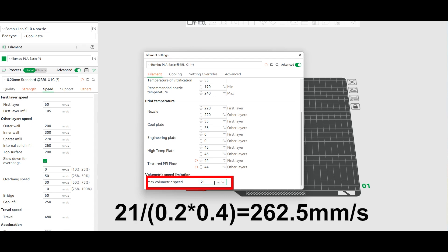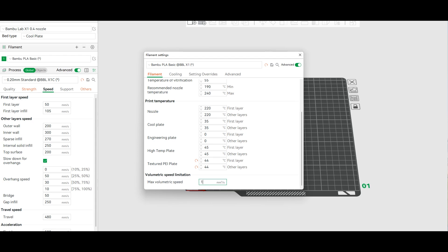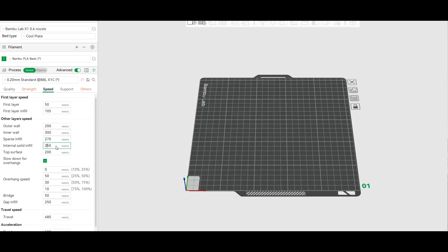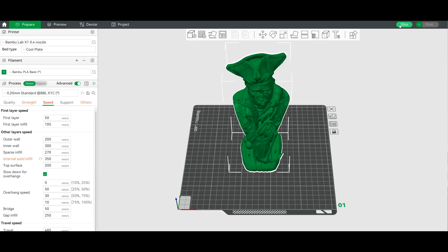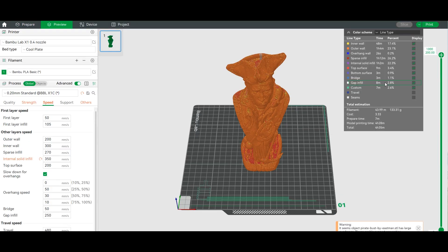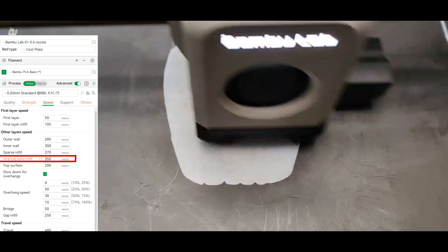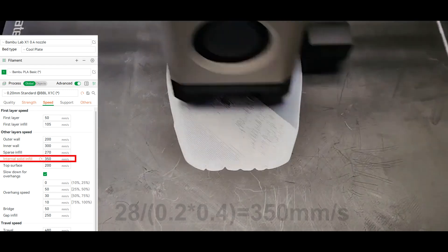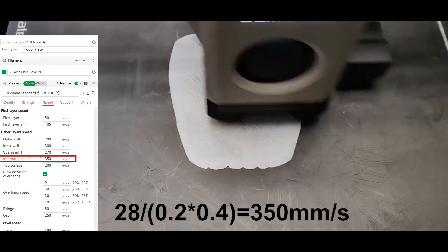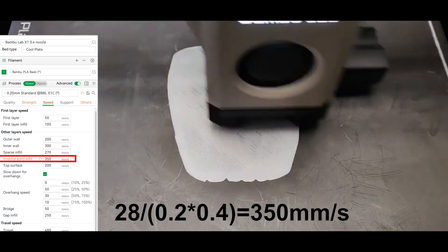At this flow and layer height of 0.2 millimeters, line width of 0.4 millimeters, the maximum print speed is 262.5 millimeters per second. During the actual test, when the 21 millimeters to the third power per second limit was canceled, the maximum print speed of the X1 was 350 millimeters per second, and the maximum volume speed was 28 millimeters to the third power per second.